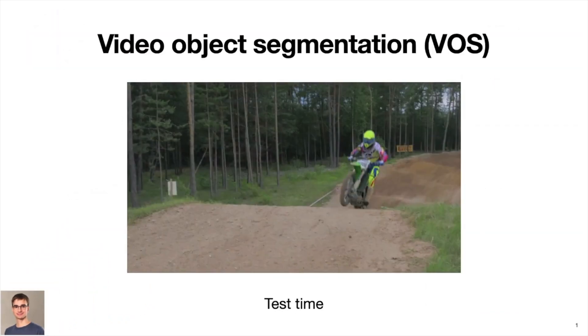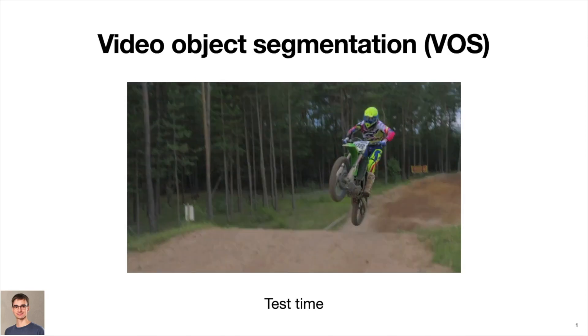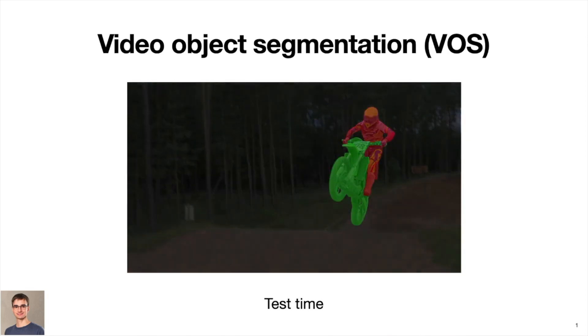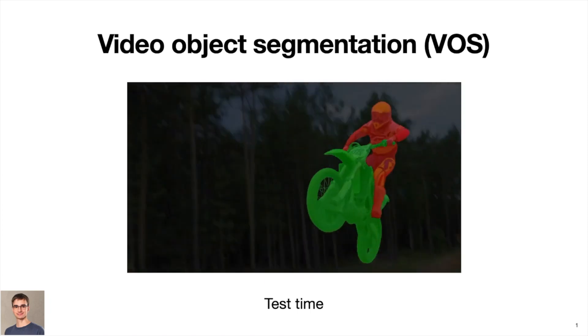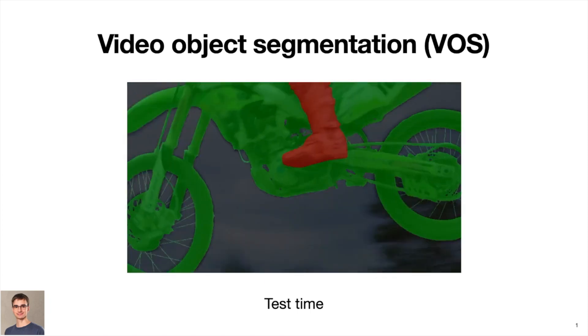The goal of this work is to perform video object segmentation. At test time, an initial annotation is provided for some reference frame. The annotation designates certain objects of interest, such as the biker and the motorcycle here. We have to densely track these objects in the subsequent frames, as the ground truth annotation here shows.